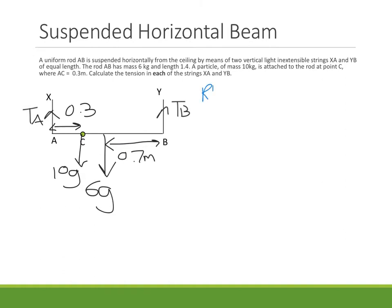So I'm going to start off by resolving vertically. I'm going to have TA plus TB equals 16G going down. So that's my first equation.